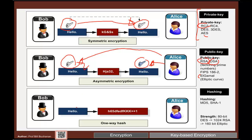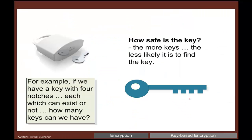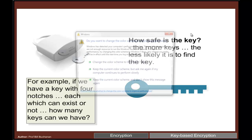With one-way hashing, a mathematical formula converts data into a unique fingerprint that cannot be reversed within a practical time. It's used to create a hash signature of data — methods include MD5, SHA-1, and so on. Regarding key sizes: for private key, around 80–128 bits is roughly equivalent in strength to a 1024-bit RSA key and about a 160-bit elliptic curve key.